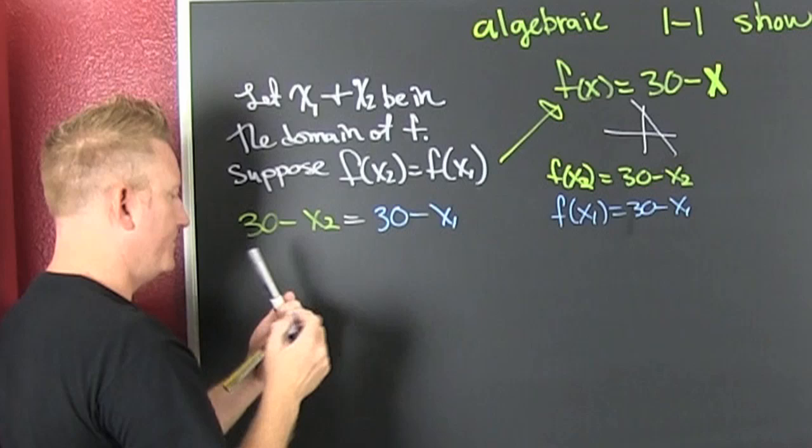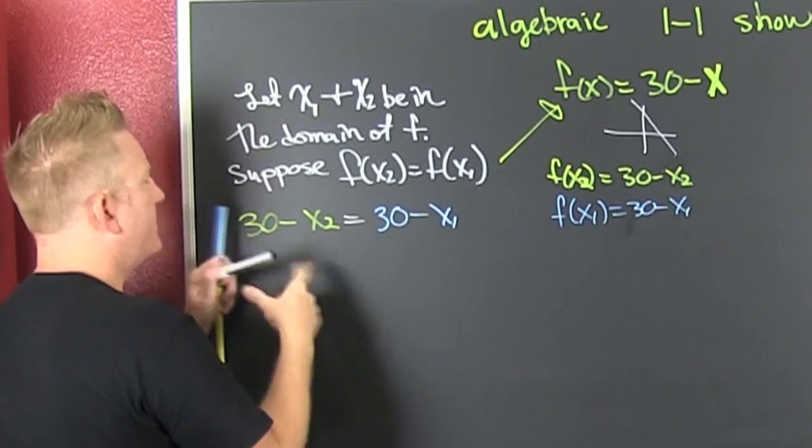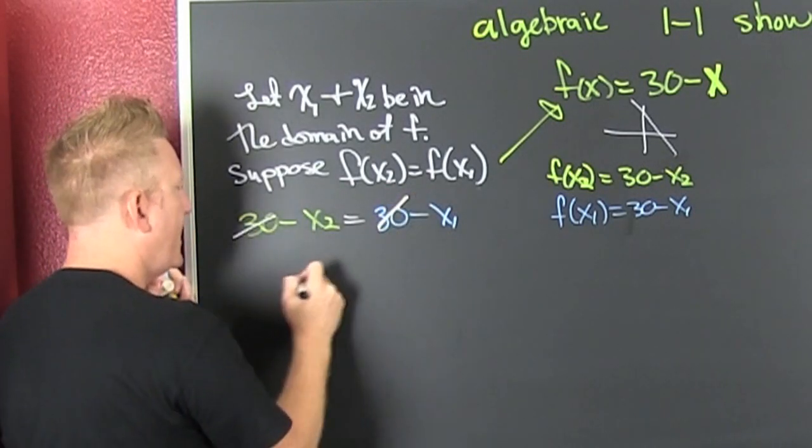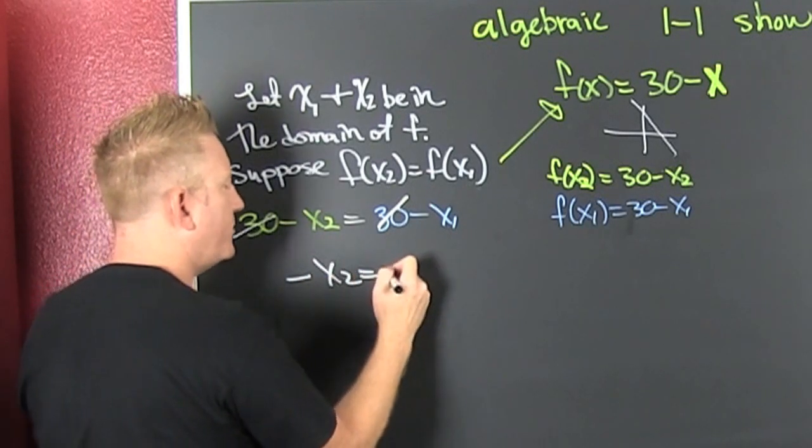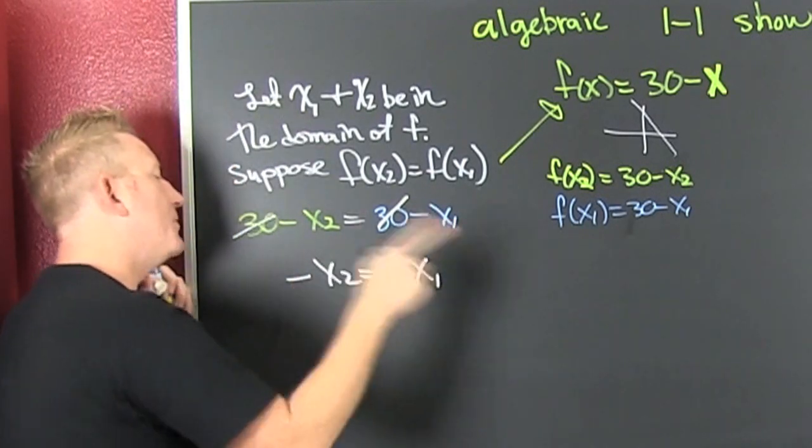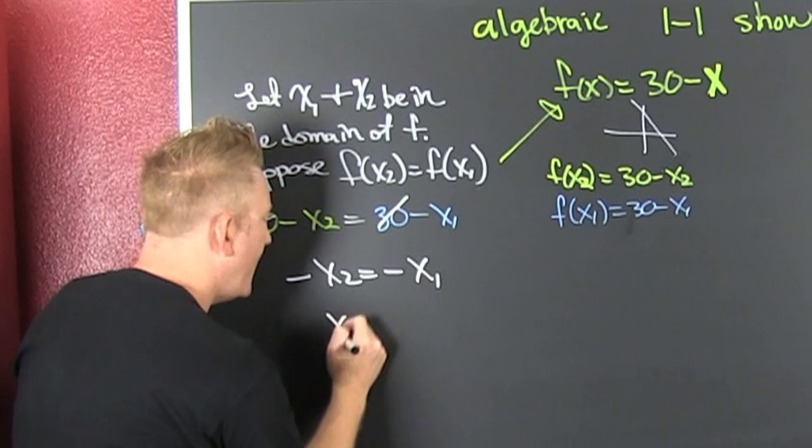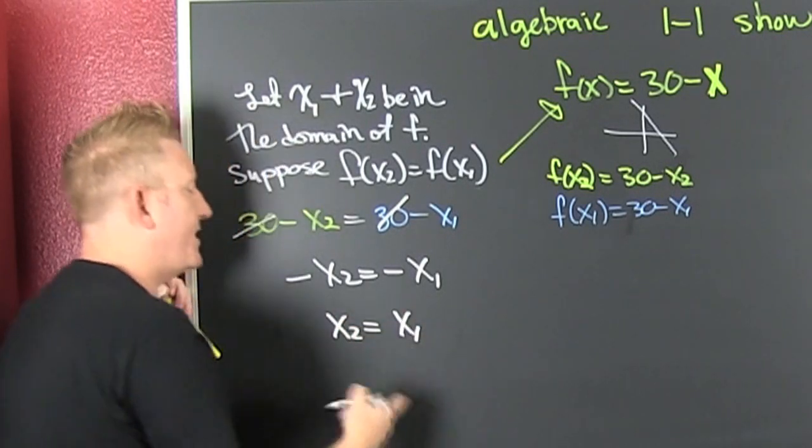Now what? We subtract the 30s off of each side, and that's a minus x2 is equal to a minus x1. Then we multiply both sides by a minus 1, and we have x2 is equal to x1.